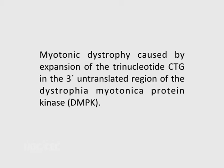However, in Huntington's disease, the number expands to more than 30 glutamines. Another example of trinucleotide expansion disease is myotonic dystrophy, caused by expansion of the trinucleotide CTG in the 3' untranslated region of the dystrophia myotonica protein kinase or DMPK gene.